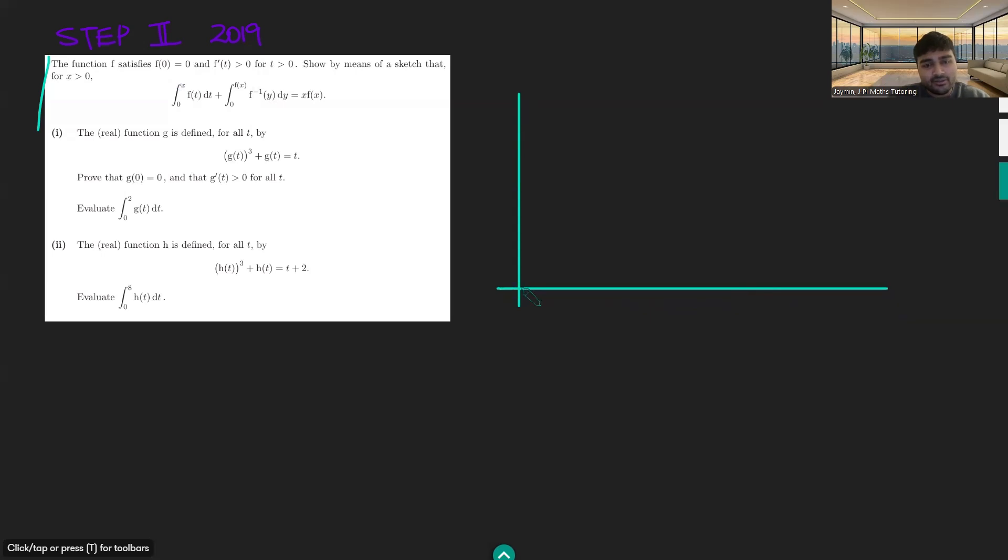So we know f(0) = 0, so it passes through the origin, and it's got a first derivative positive, so it's going to be an increasing function and continuous as well. So maybe it looks something like that, something like this. So this is going to be y equals f(t). This is my t-axis, this is my y-axis.